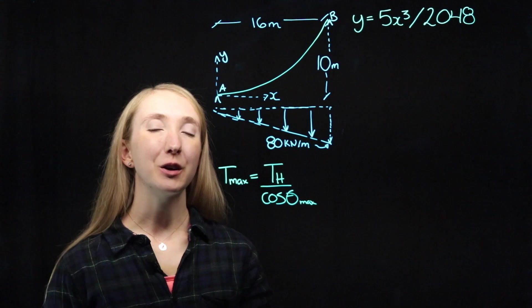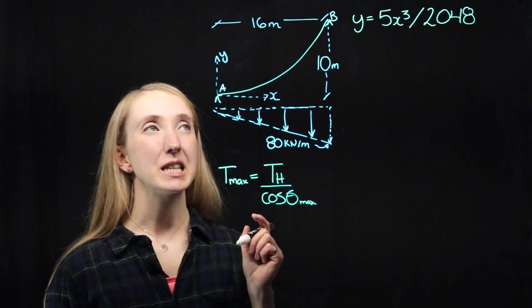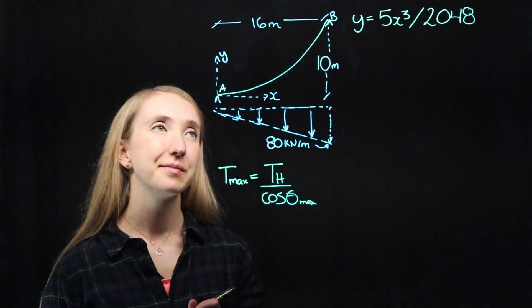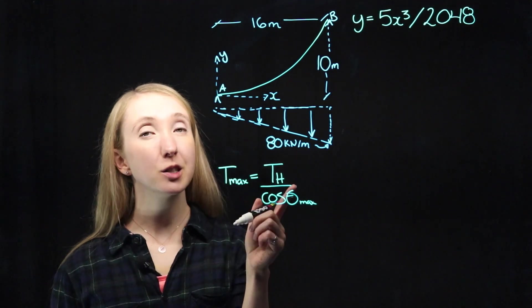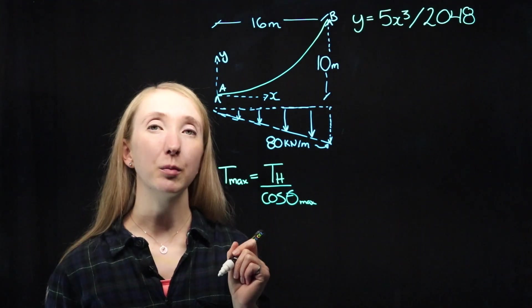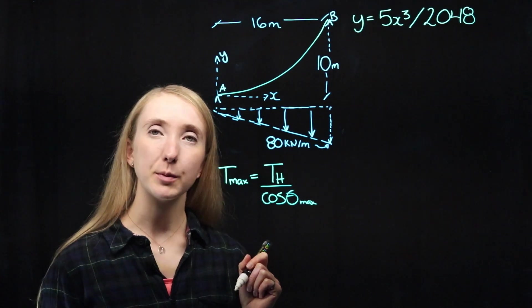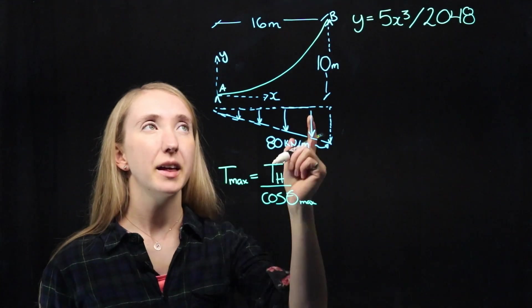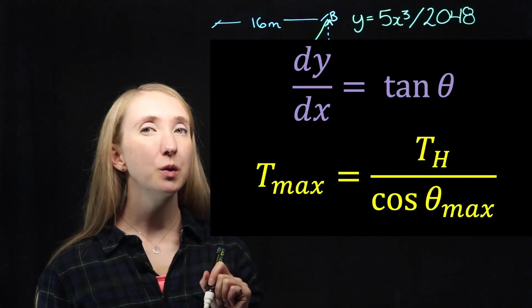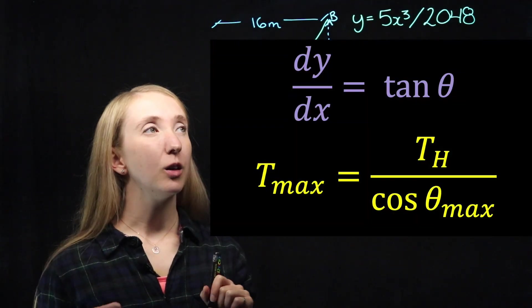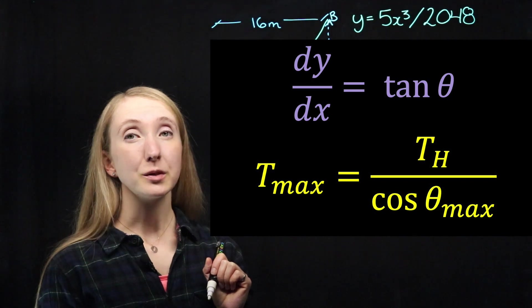Part B of our question asks us to find the maximum tension in our cable. We know that the tension is its maximum where the slope and angle of our cable are also their maximum. In our system, that happens right at the support.